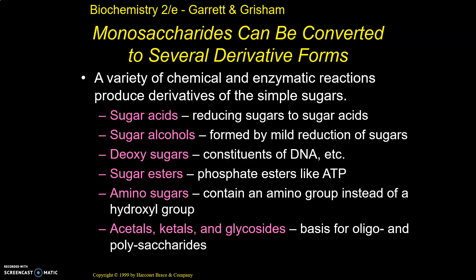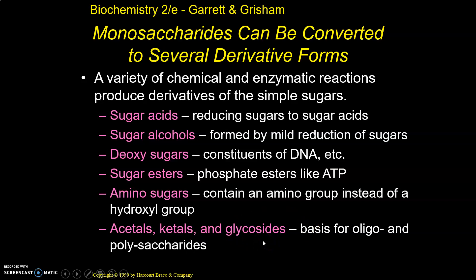So let's talk about how we can take these monosaccharides and get some different derivatives. There are a whole bunch of different derivatives we can come up with: sugar acids, sugar alcohols, deoxysugars, sugar esters, amino sugars and acetyls, ketols and glycosides. We're going to look at each one of these and talk about what these derivatives of simple sugars look like and what they can do.